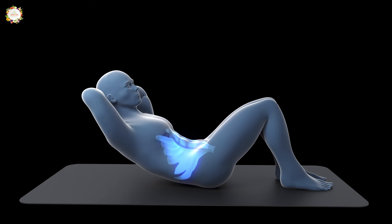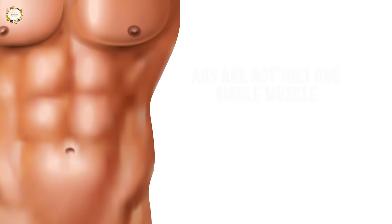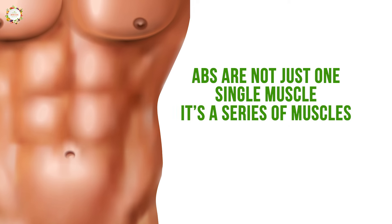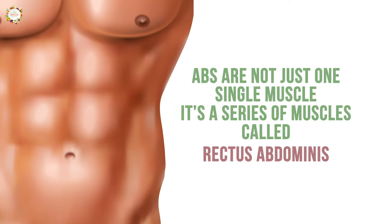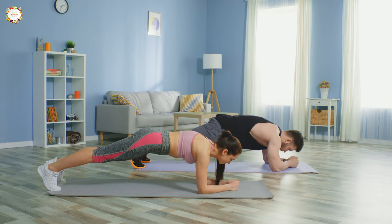Doing 500 to 1000 crunches a day will not help you achieve a flat belly. You should try to work on the entire core. Abs are not just one single muscle — they are a series of muscles called the rectus abdominis. We need to work on our back muscles as well, because if you're only doing crunches you'll develop poor posture and back pain. Always focus on full core exercises like planks.